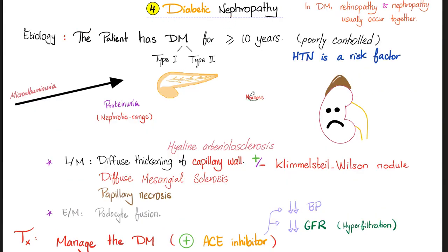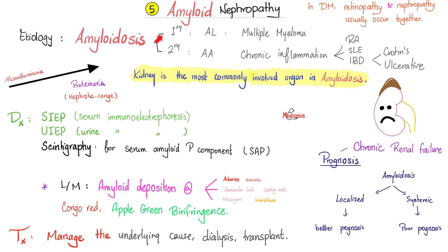Diabetic nephropathy: diabetes type 1 or 2 for a long time. You have capillary wall problems, thickening, hyaline arteriolosclerosis, the famous Kimmelstiel-Wilson nodule, mesangial sclerosis, papillary necrosis, eventually kidney failure. ACE inhibitors work like magic. Amyloid nephropathy is caused by amyloidosis, primary or secondary — you cannot treat it unless you treat the underlying cause. Don't forget your apple-green birefringence.